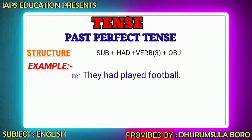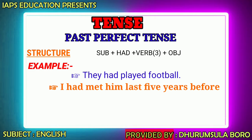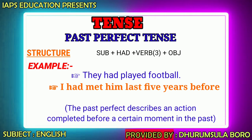'Had' is the auxiliary verb — the helping verb. The auxiliary verb used here is the past form of 'have.' To understand examples: 'I had met him last five years before.' The past perfect tense is used to express an action completed before a certain moment in the past.